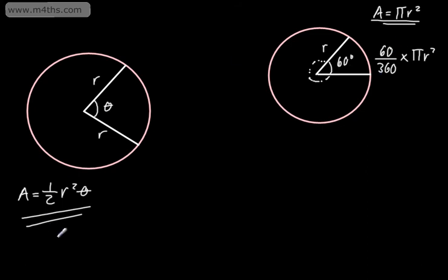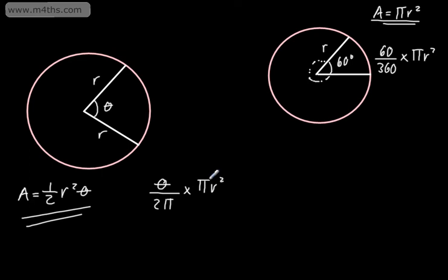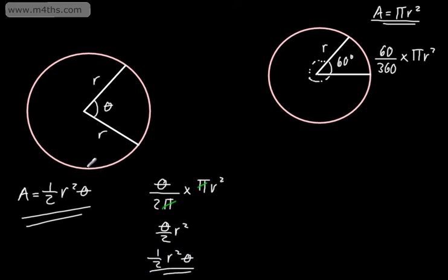Let's consider now if theta is measured in radians. We know that the portion of the circle we're going to have is theta over 2 pi radians, then we would multiply it by the area of the circle, which of course is pi r-squared. We can see from this that theta over 2 multiplied by r-squared will give us the area, as the pi's are going to cancel. So if I cancel these off — pi will cancel here, pi will cancel there — we can write this as theta over 2 times r-squared, or equivalently, one-half r-squared theta. That is where the formula comes from, and all we need to do is simply plug the numbers in.